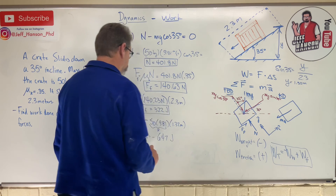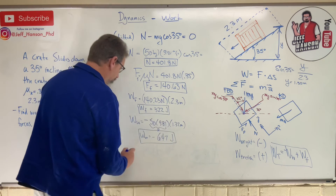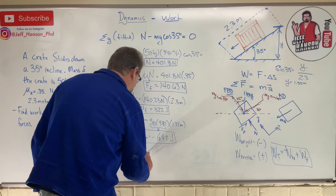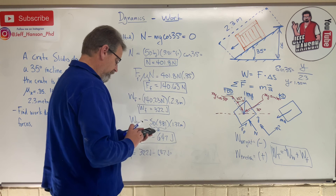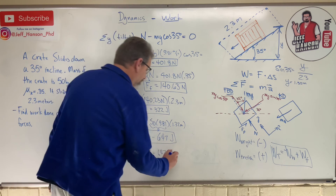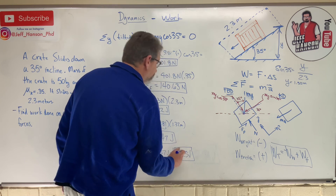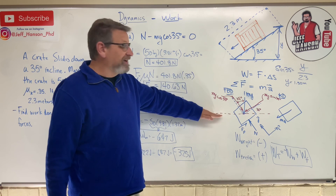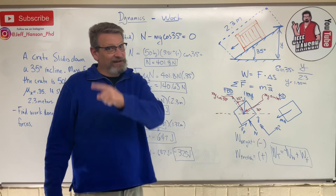We're one step from the finish line. Total work = 322 joules minus 647 joules = −325 joules. That's your final answer. It all comes back to Newton's second law and our kinetic and free body diagrams to calculate work. I hope this helps — see you in the next video.